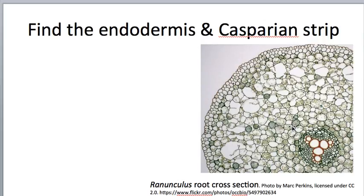We looked at this slide once already, but I want to give you an opportunity to test yourself. Can you find the endodermis with its associated Casparian strip? You can pause the video if you need to. Hopefully you identified the difference right here, where the cells suddenly have very dark cell walls and go from being large to small — that's our endodermis with its Casparian strip.